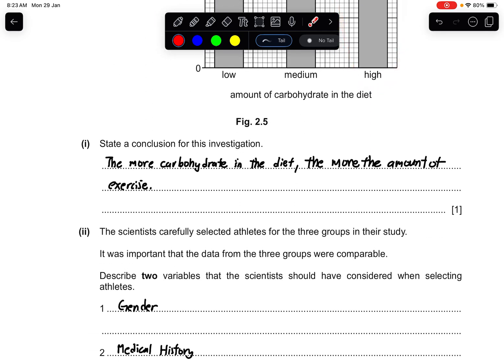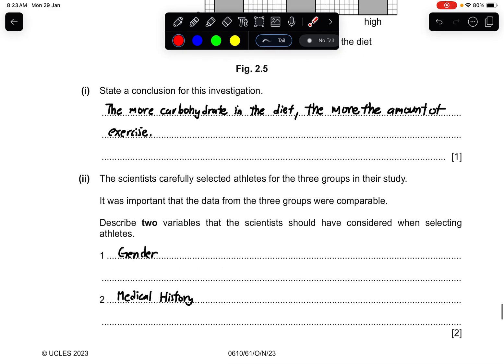Part two: The scientists carefully selected athletes for the three groups in their study. It was important that the data from the three groups were comparable. Describe two variables that the scientists should have considered when selecting athletes: gender, medical history, diet, age, mass, fat to muscle ratio, sports discipline, lifestyle - like do they drink alcohol, do they smoke, do they take drugs or anything.